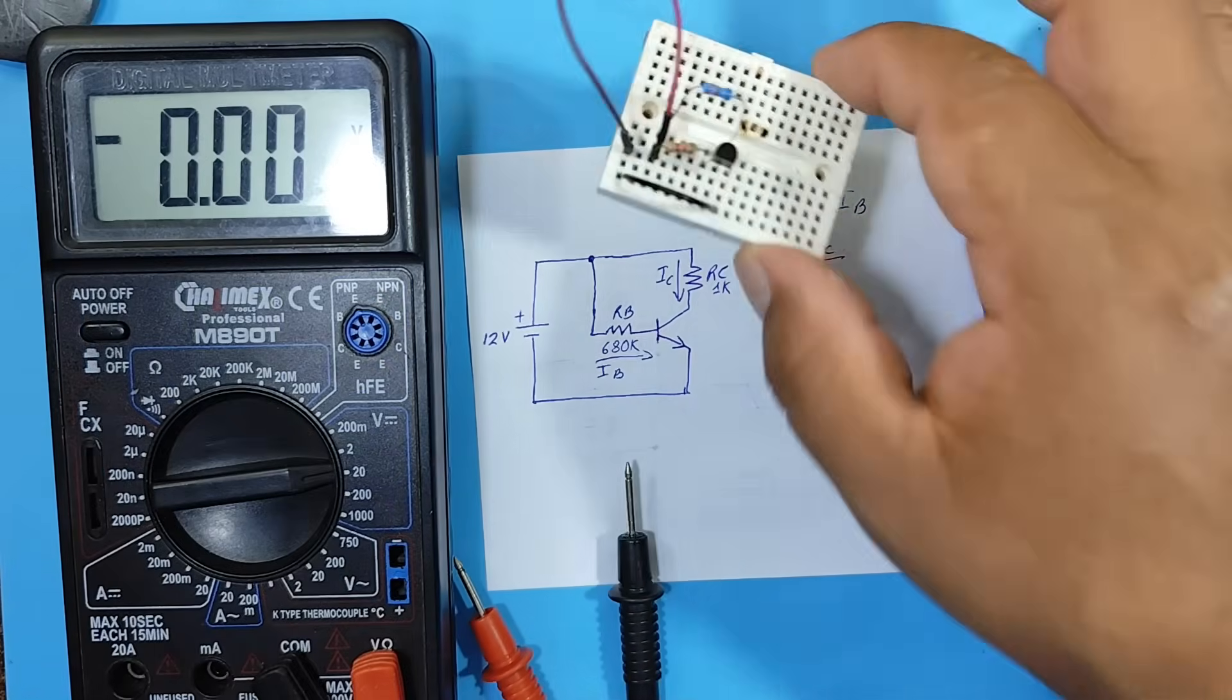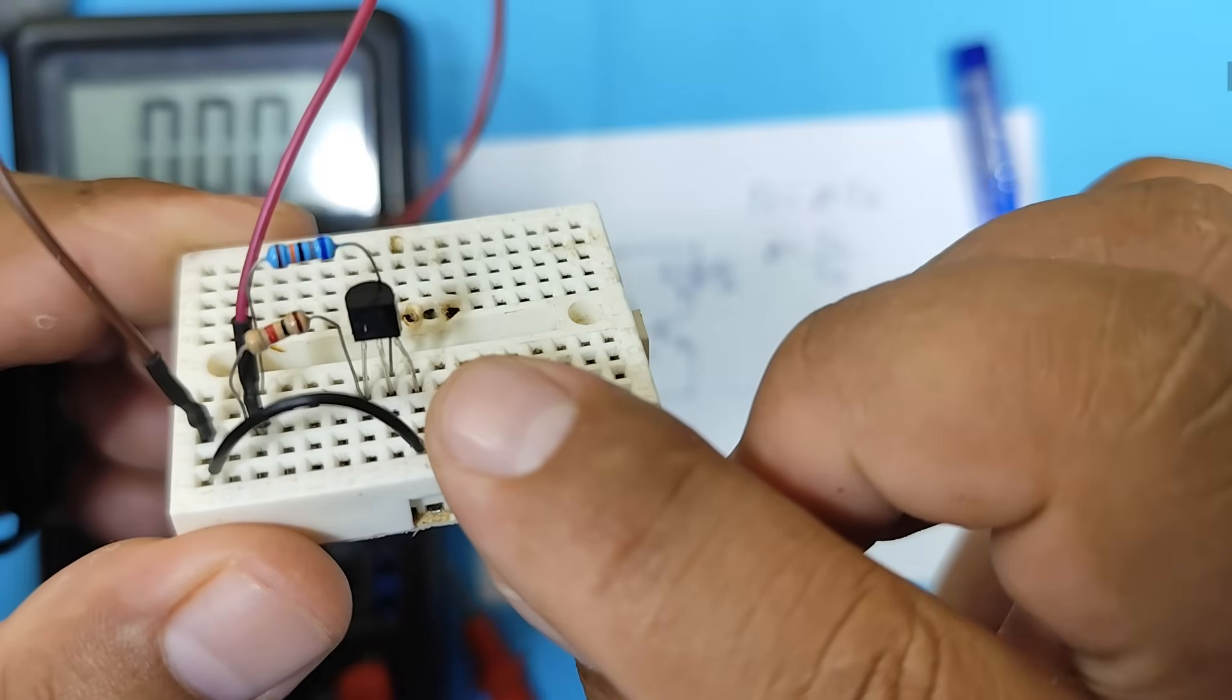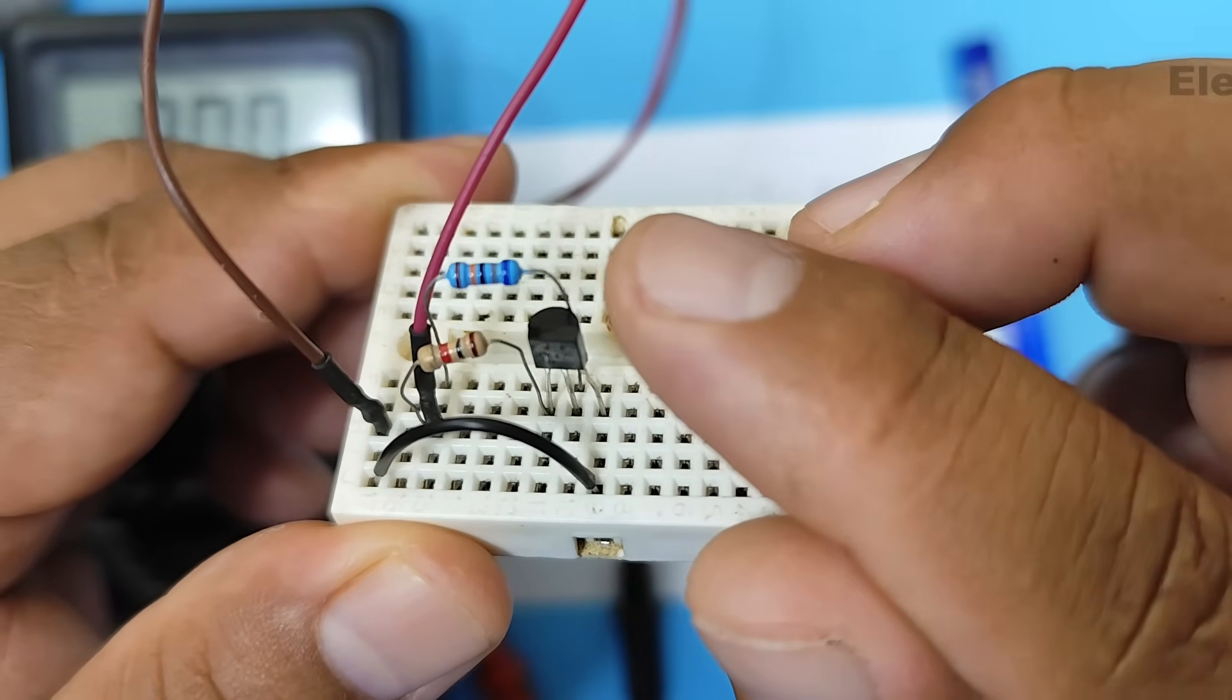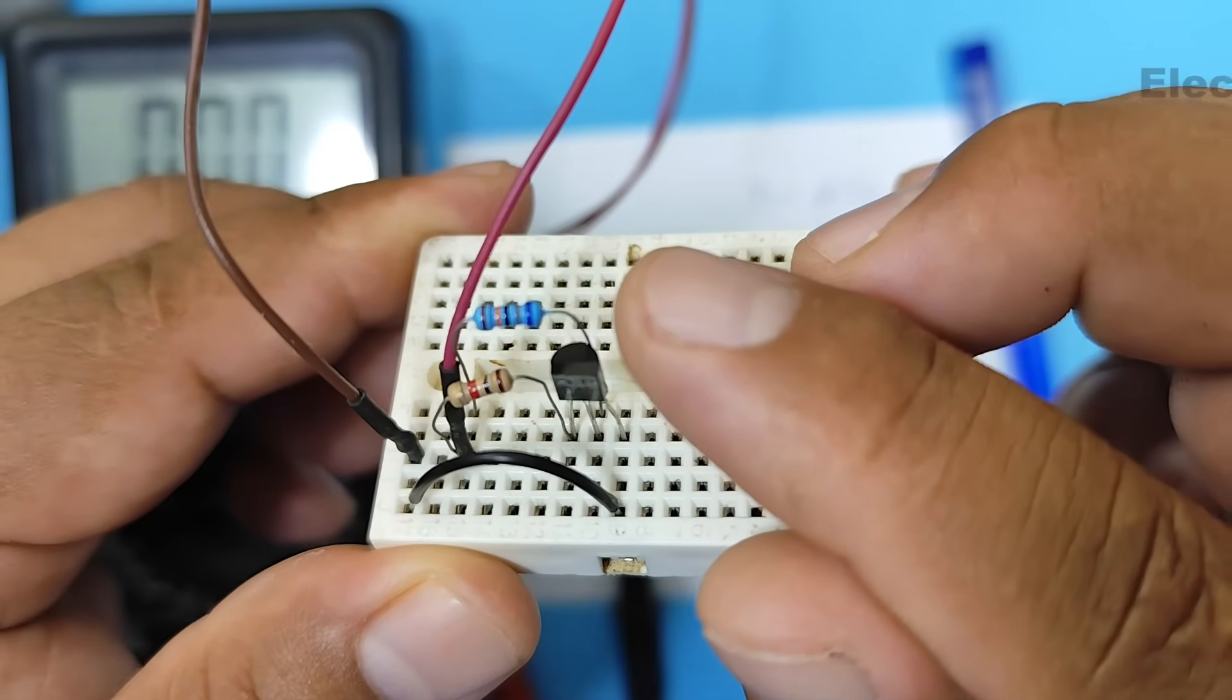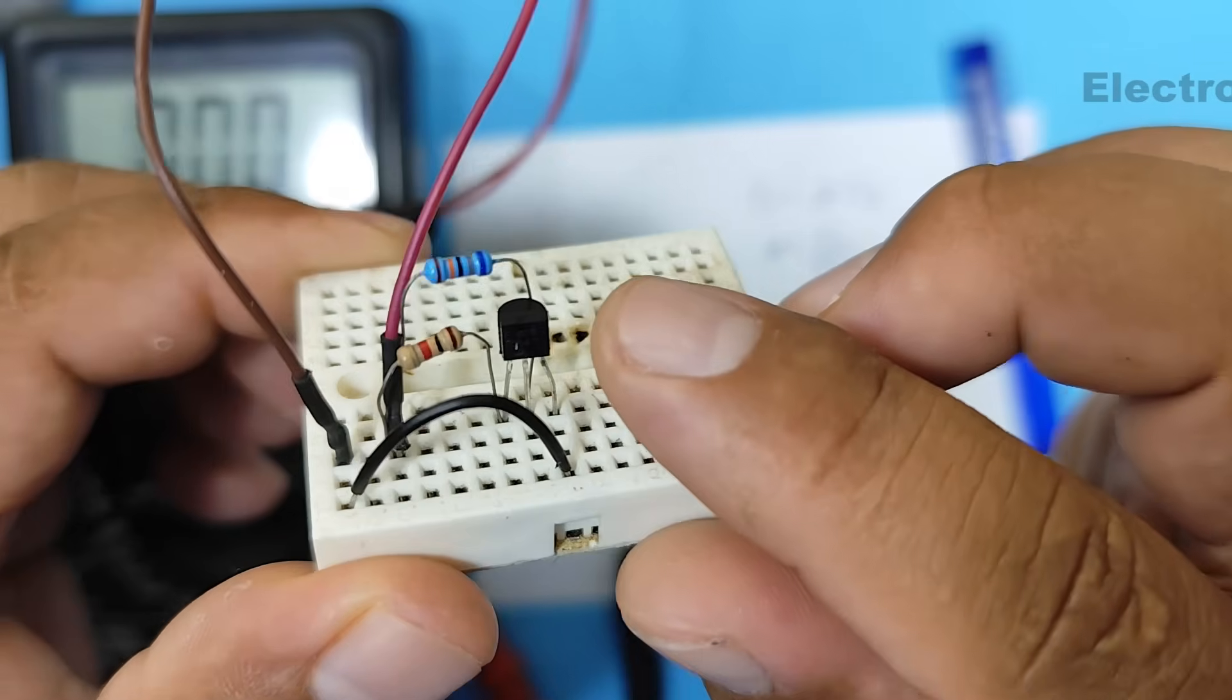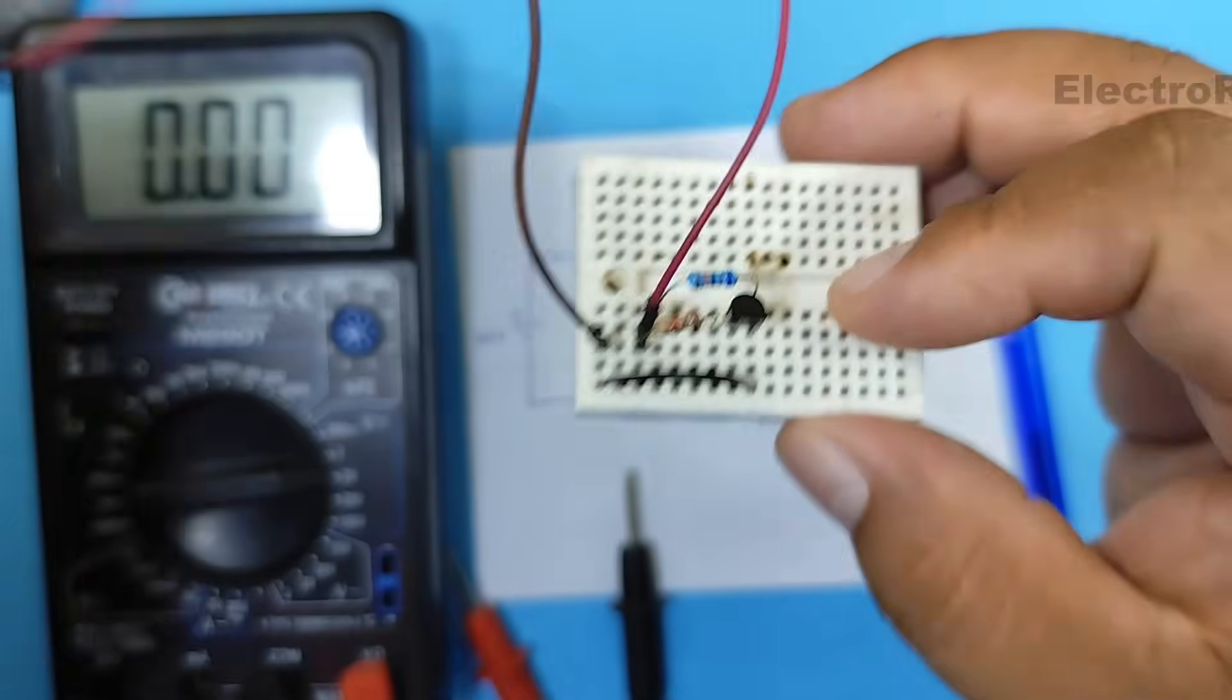Great, we now have the circuit assembled, as you can see. There we have the 1 kiloohm resistor. The 680 ohm resistor, whose actual value in this case is 696 kiloohms. And the BC547 transistor.